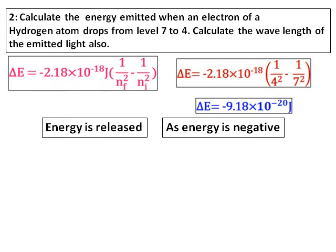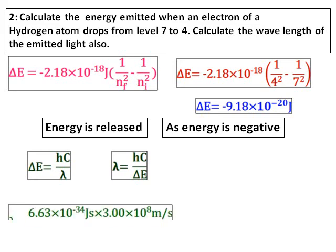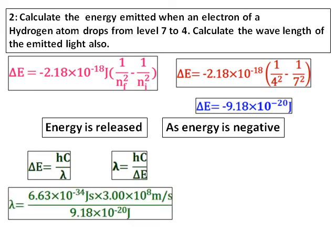In this case, they have asked you the wavelength of the light also. In order to calculate, use the formula delta E equals hC over lambda. Lambda can be rearranged. We have the value of delta E, h, and C. Substitute all the values and get the value of lambda after converting it into nanometers.